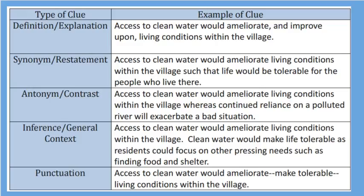The third type of clue is an antonym or contrast. 'Access to clean water would ameliorate living conditions within the village, whereas continued reliance on a polluted river would exacerbate a bad situation.' They are contrasting what clean water would be like when living conditions are ameliorated versus what it would be like if they continued to rely on polluted river water.